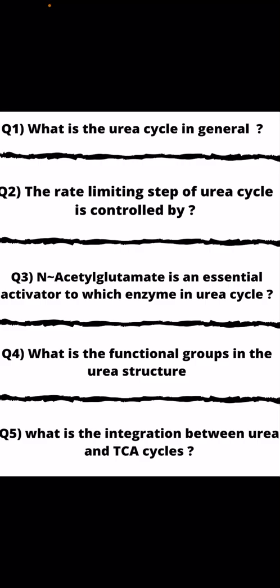Question 1 and Question 2: The rate-limiting step of the urea cycle is controlled by which enzyme? The answer is carbamyl-phosphate synthase.